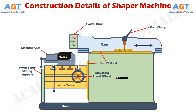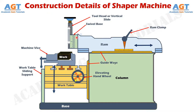Connected to the ram on its front side there is a swivel base, which is a circular structure with scales or graduation measured in angles. Connected to the swivel base there is a tool head, also called a vertical slide, which can move upward or downward vertically. The tool head can also be rotated or swivelled to any angle with the help of degree scales on the swivel base. A hand wheel on top allows the tool head to move upward and downward and give the required feed to the cutting tool.